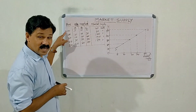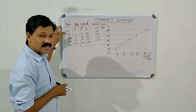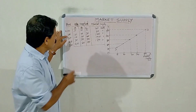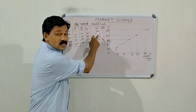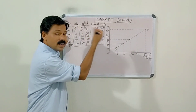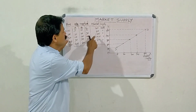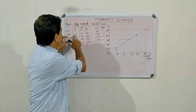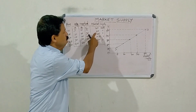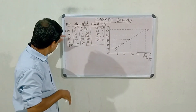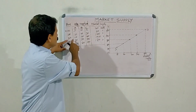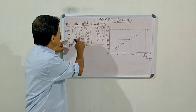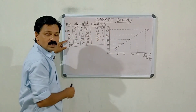As and when the price of the commodity, say good X, rises and increases from Rs.10 to Rs.20, the quantity which is offered for sale or the quantity which is supplied by the three producers is equal to 60 units. That is the horizontal summation of 10 plus 20 plus 30 is equal to 60. Likewise, when price increases from 20 to 30, the quantity which is offered for sale also will increase.